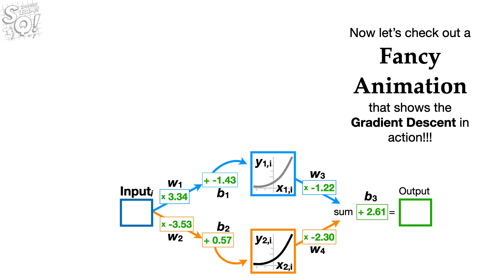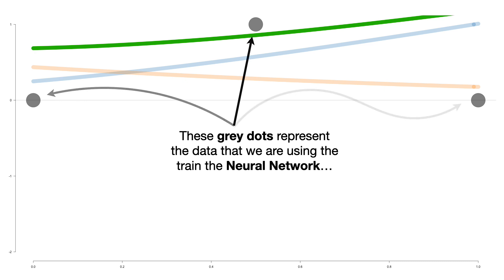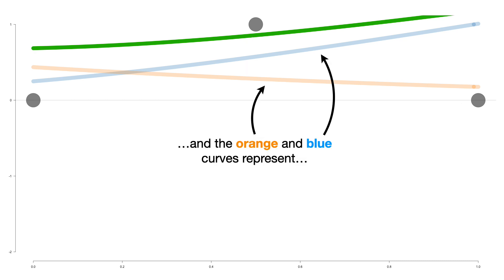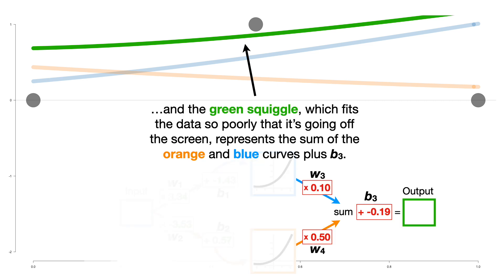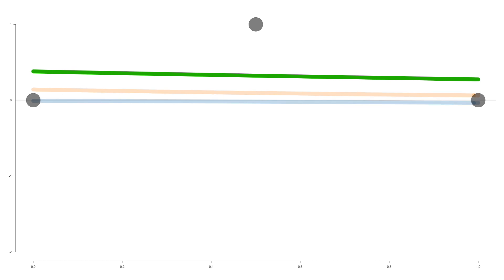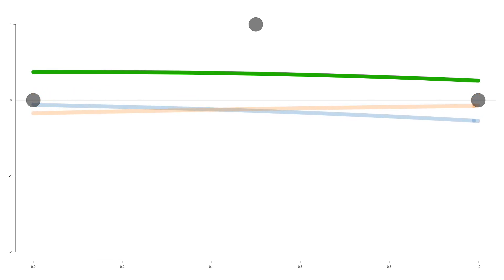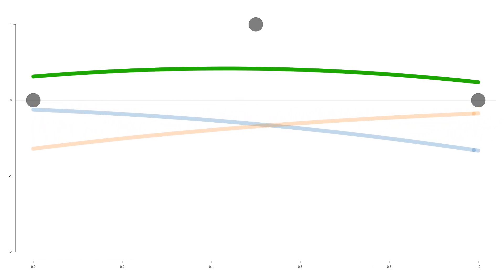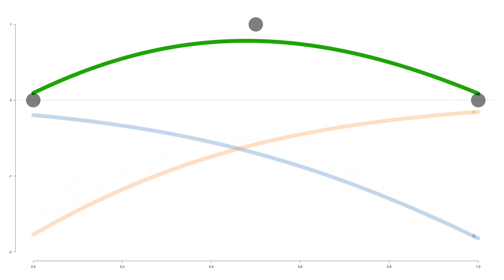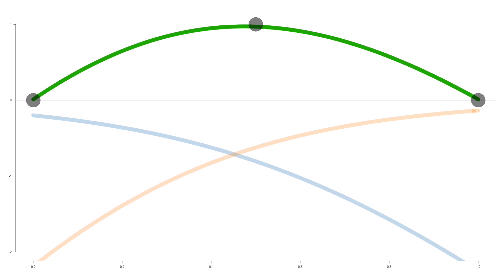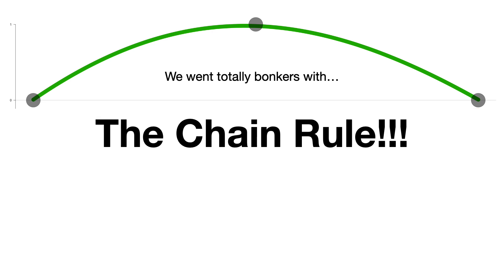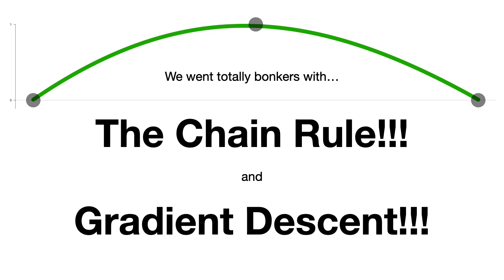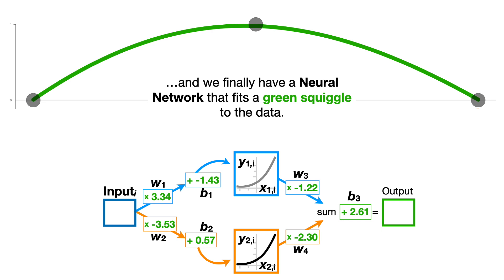Now let's check out a fancy animation that shows the gradient descent in action. The gray dots represent the data used to train the neural network, and the orange and blue curves represent their respective curves. The green squiggle — which fits the data so poorly that it's going off the screen — represents the sum of the orange and blue curves plus B sub 3. Watch how gradient descent fits the green squiggle to the data after 450 steps. We went totally bonkers with the Chain Rule and Gradient Descent, and we finally have a neural network that fits a green squiggle to the data!